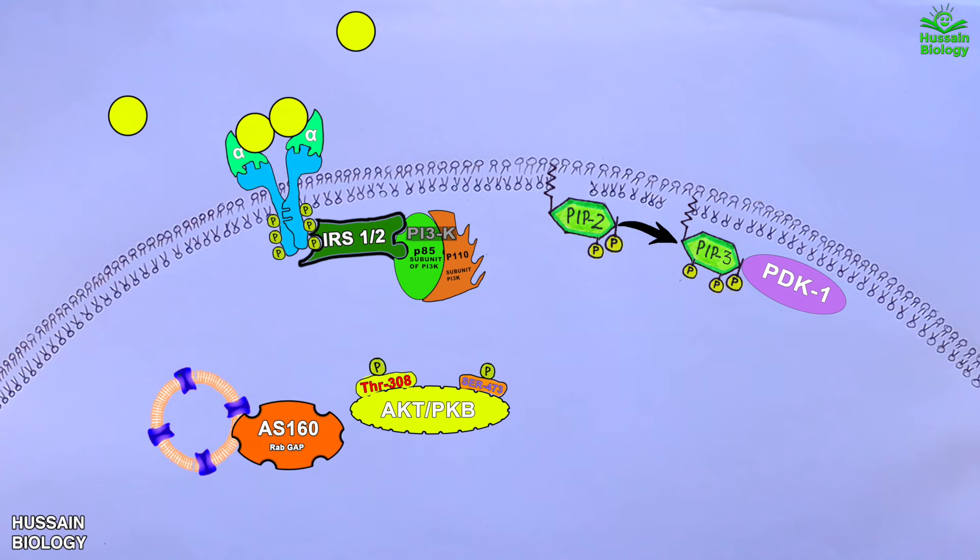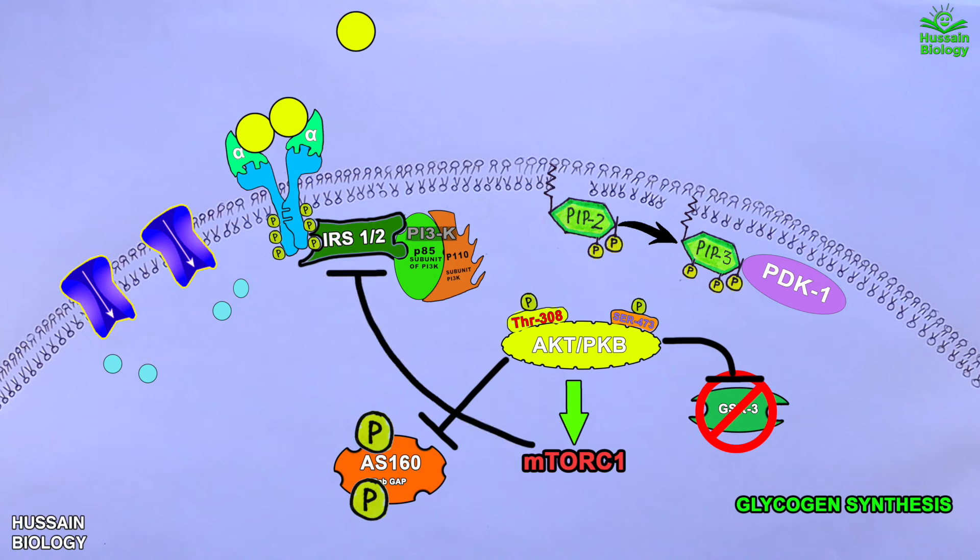Furthermore, we see that AKT also activates the mTORC1 protein, which inhibits the IRS protein in a negative feedback loop.